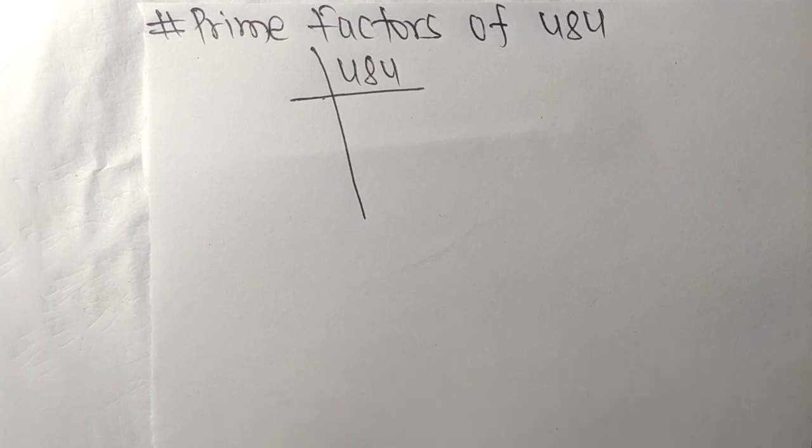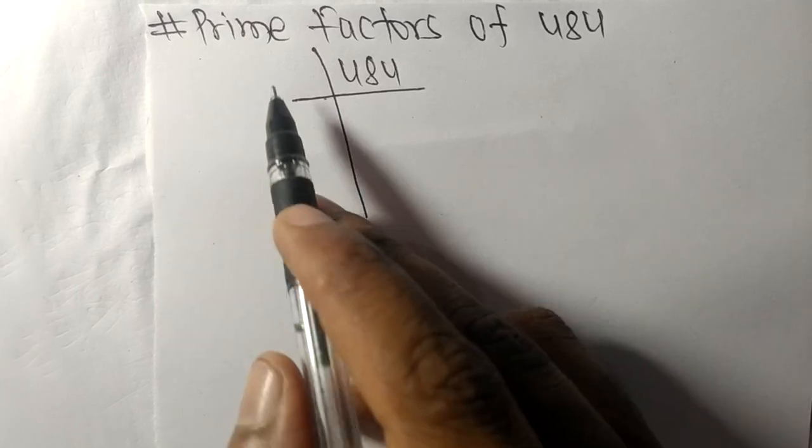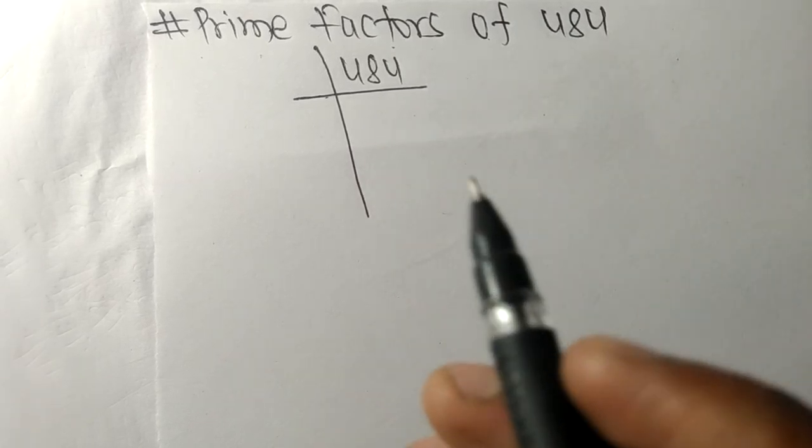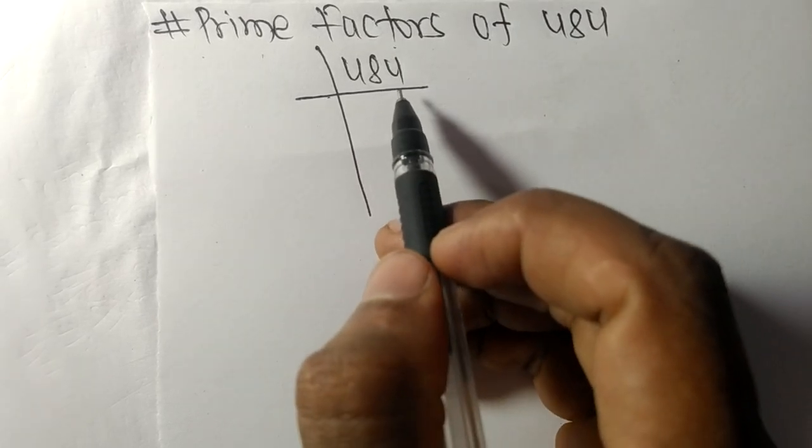So today in this video we shall learn to find the prime factors of 484. So at last it contains an even number 4, so this whole number is divisible by 2.